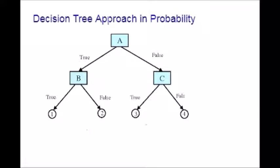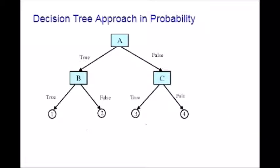First, let me define what is a Decision Tree. A Decision Tree is a diagram — a diagrammatic representation of all possible solutions to a decision. It shows different outcomes from a different set of decisions. This diagram is widely used as a decision-making tool for analysis and planning. This diagram actually starts with a box or a root — a single point — which branches off into several solutions. That's why we call it a Decision Tree.